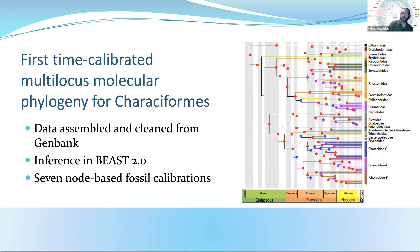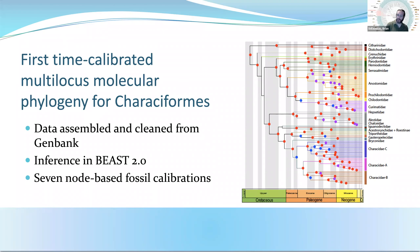In order to make sense of all that diversity, Mike also needed to hang it on a phylogeny. What you see here is the first time-calibrated multi-locus molecular phylogeny for Characiformes. It's not the first phylogeny from the order, but it is the first one that included a time axis, which is very important for the analyses we wanted to do. We assembled and cleaned available sequence data from GenBank and inferred this time tree in BEAST version 2.0, with seven node-based fossil calibrations giving us not only relationships among species and families but also how long ago each split happened. The earliest stages of diversification push well back into the Cretaceous, prior to the separation of Africa and South America.